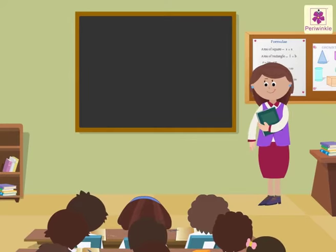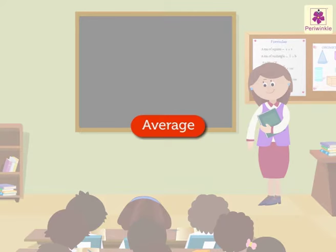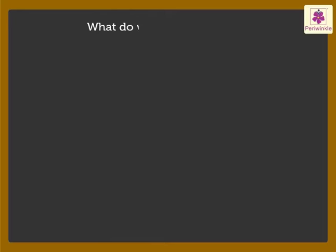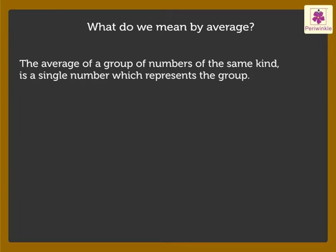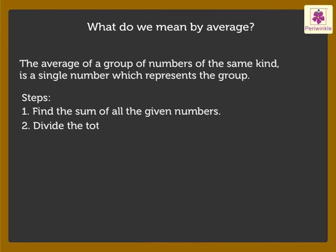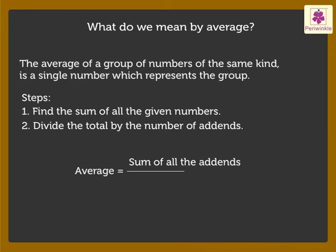Today, let us learn about average. The average of a group of numbers of the same kind is a single number which represents the group. We find out the average of a group of numbers by adding up all the numbers and then dividing the total by how many numbers there were. Therefore, average is equal to sum of all the addends upon number of addends.